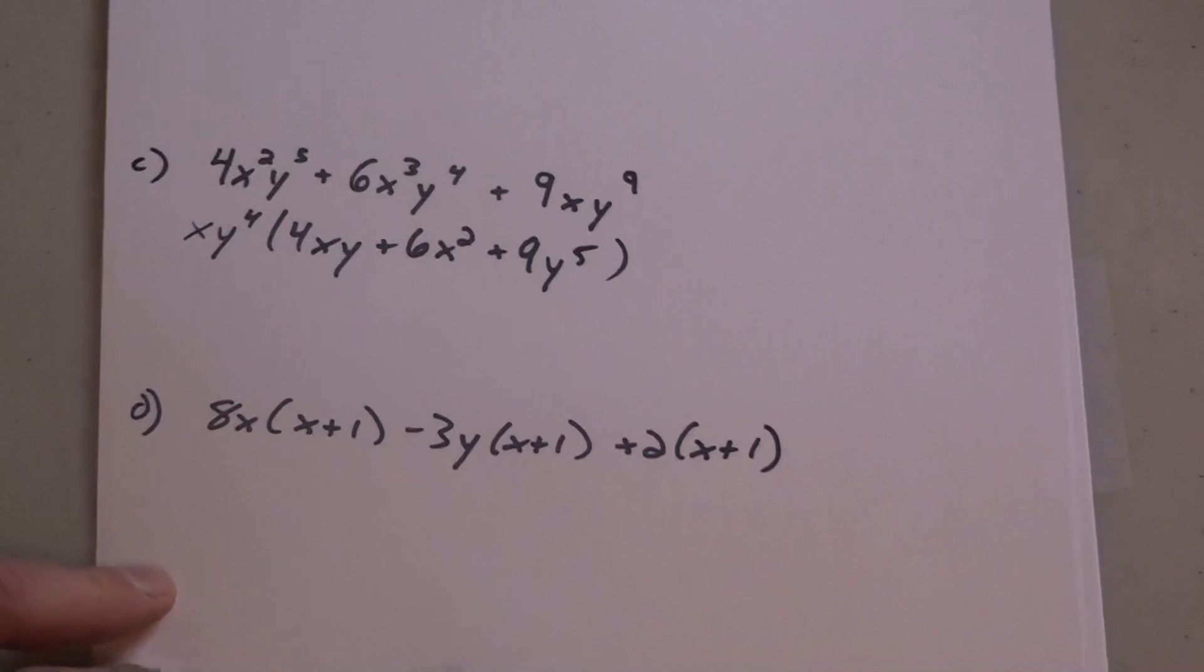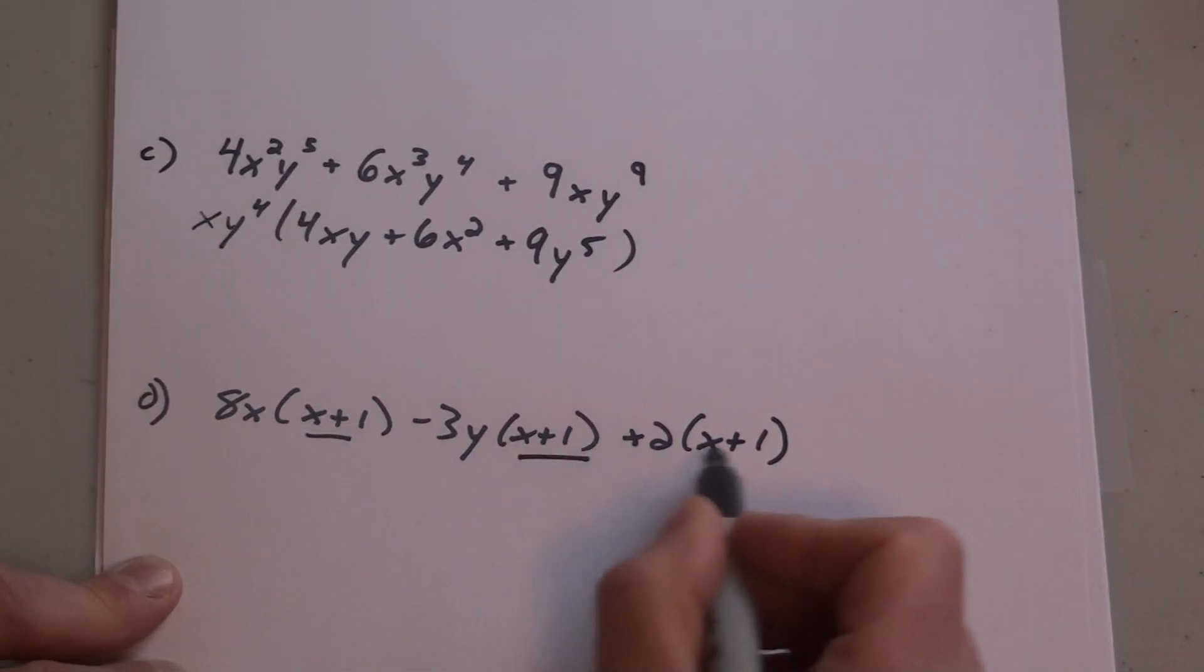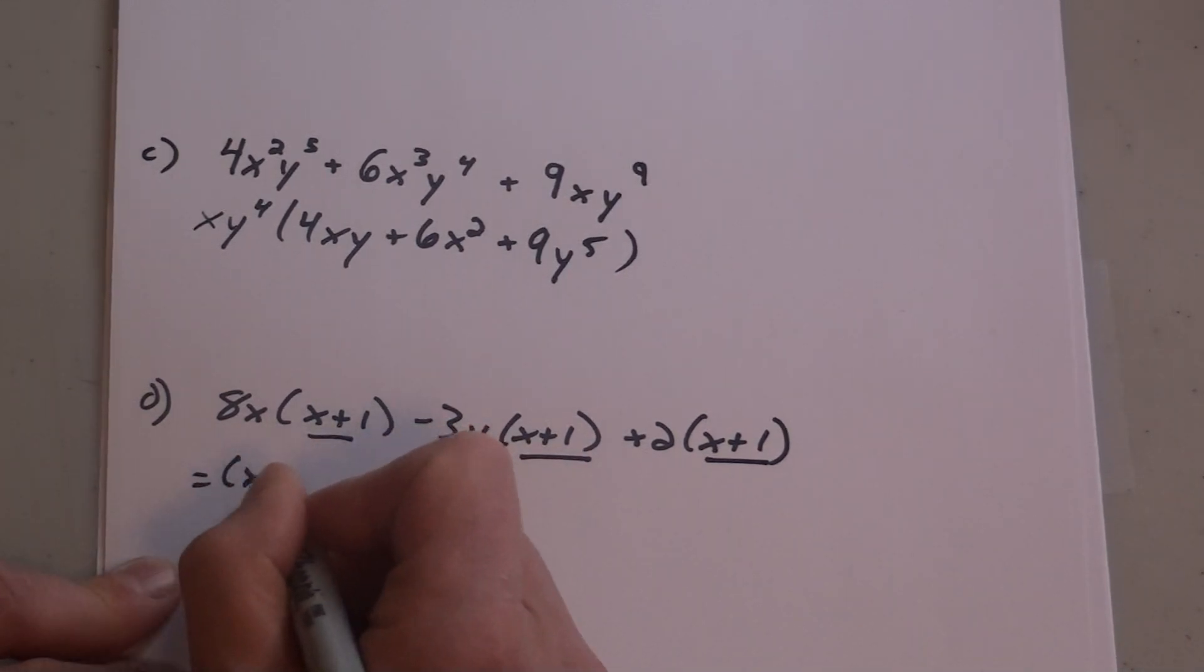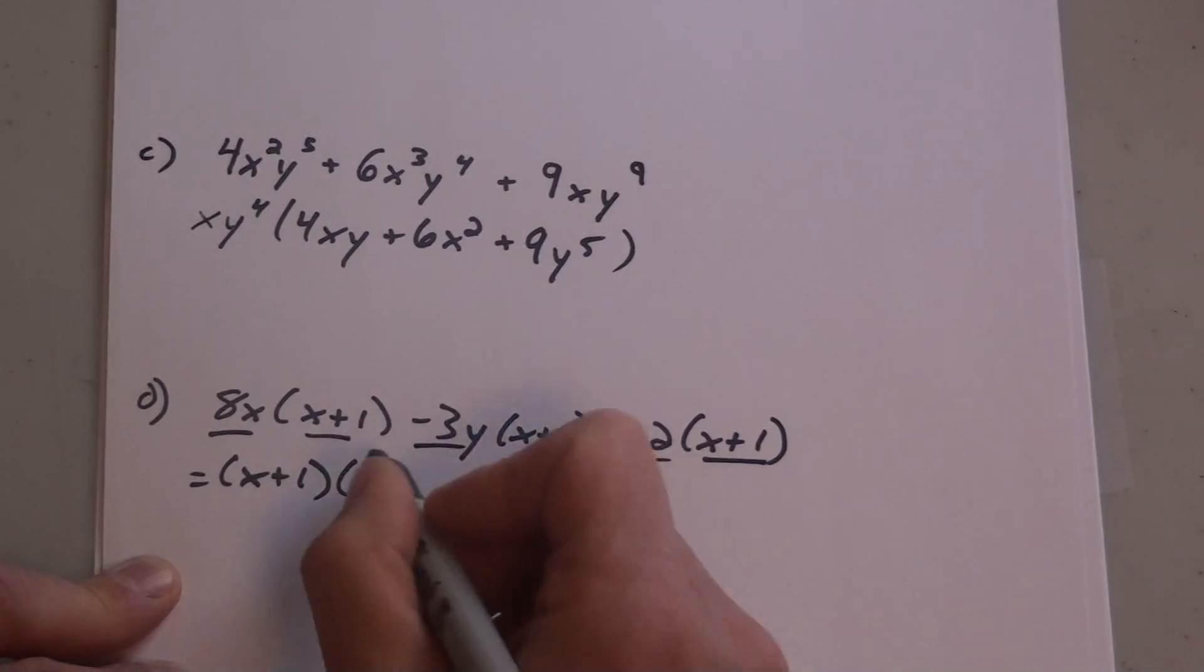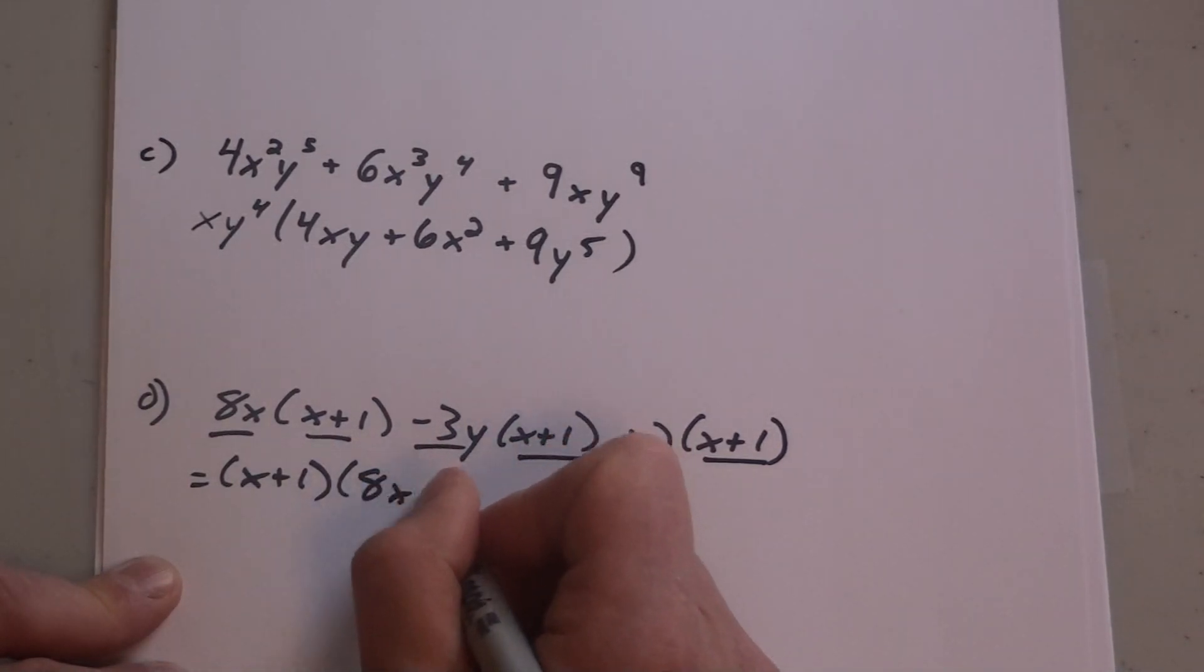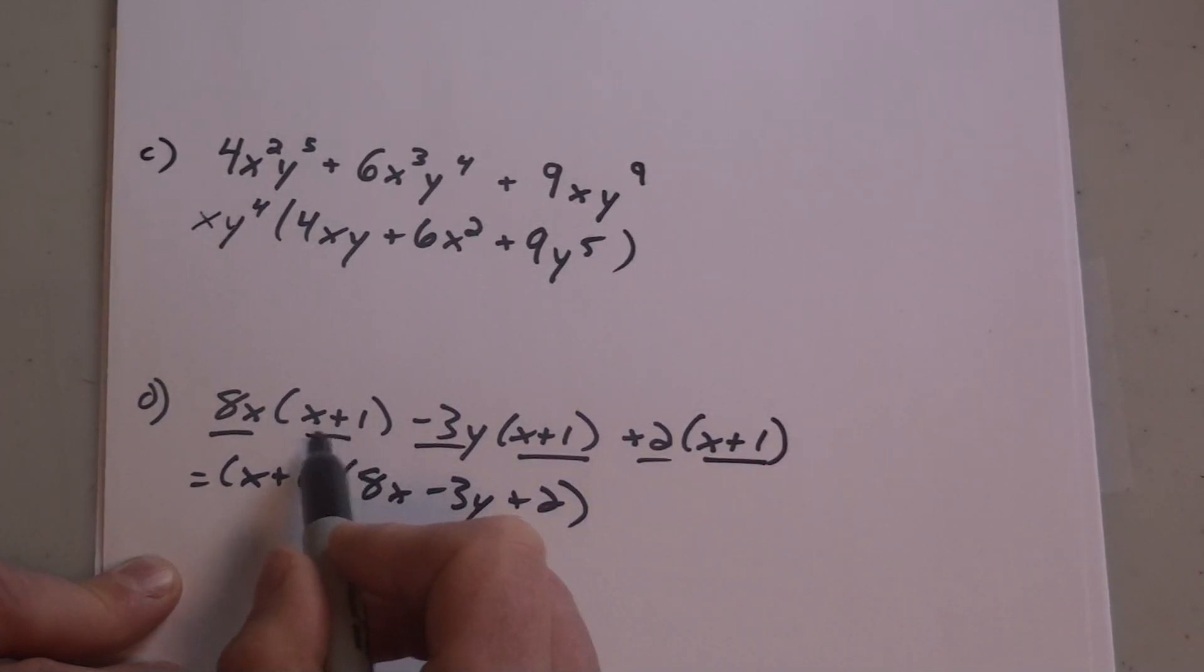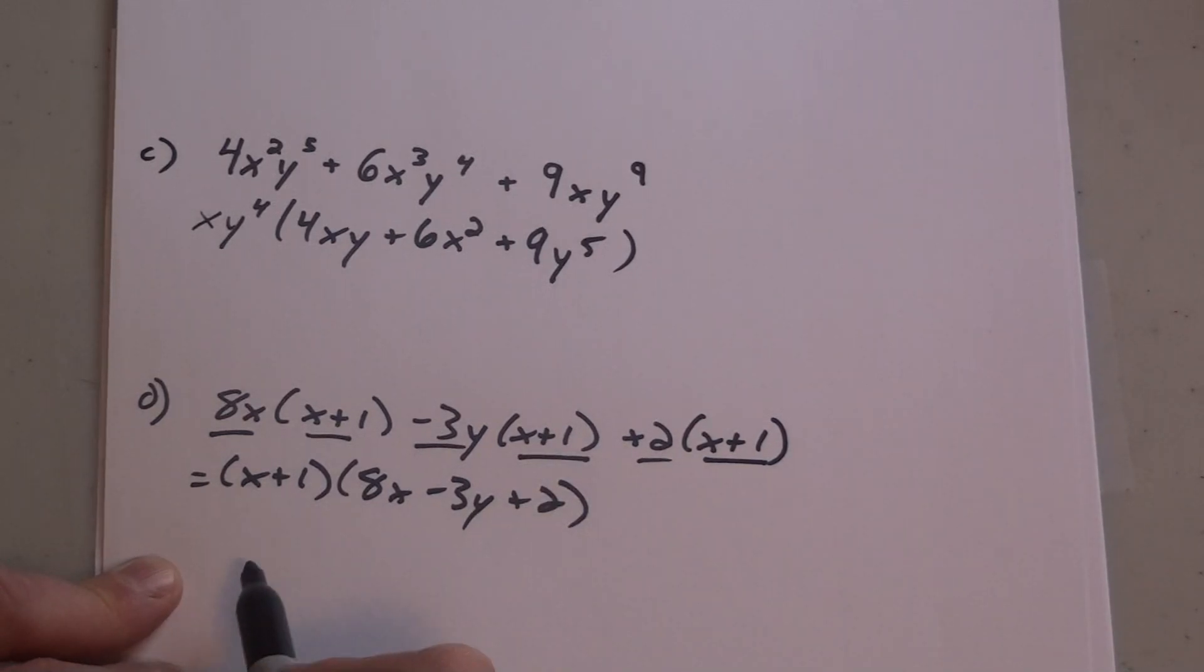For the fourth example, the binomial which is in brackets is actually what's in common. So I'll divide it out, and then I'm going to have my leftovers from my second bracket: 8x minus 3y plus 2. In this case, the greatest common factor was actually the binomial, the x plus 1 binomial that I had to take in front.